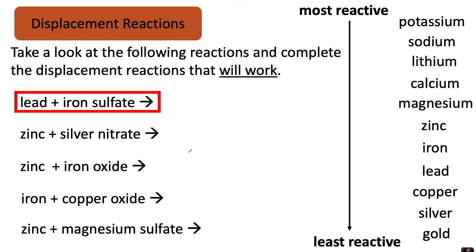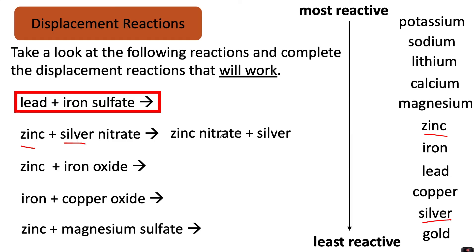For the second one, you have zinc and silver nitrate. Zinc is more reactive than silver, so it will displace the silver. You will end up with zinc nitrate plus silver.